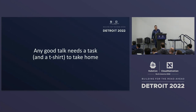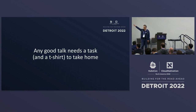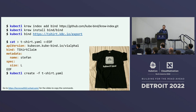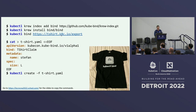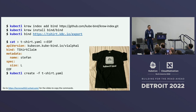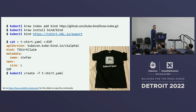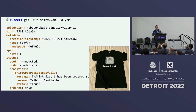We are nearly at the end. Any good talk needs a task and a t-shirt to take home. We've built a SaaS service for you to use. Go to the KubeCon website — the slides are uploaded. There's an API called t-shirt.k8s.io and you can bind to it in your cluster. Install the bind command via Krew plugin installer, apply your t-shirt claim, check the status, and you'll see a code to pick up at the booth.